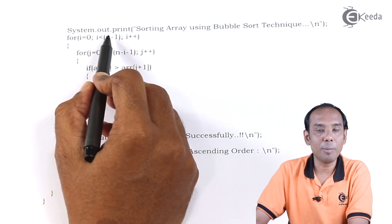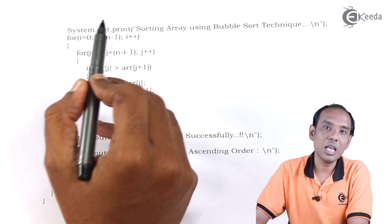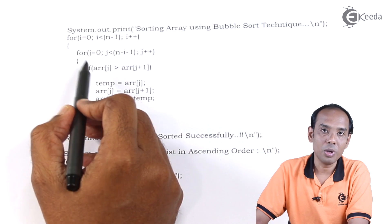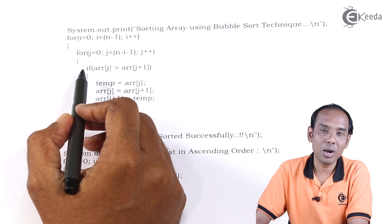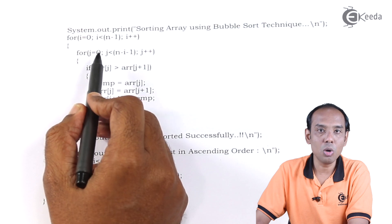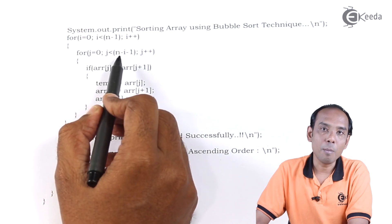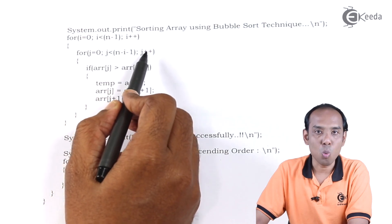For i equal to 0, i will go up till n minus 1. Then we will start with the inner for loop. For this we have used the variable j. j equal to 0, j less than n minus i minus 1.